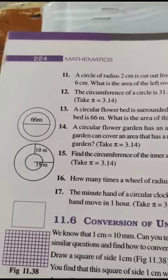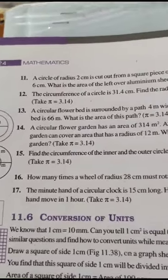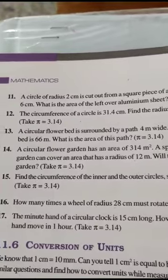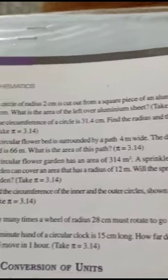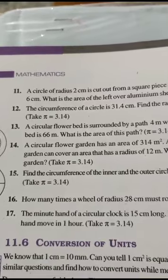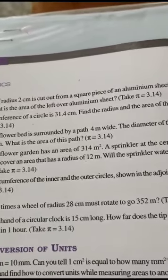Now, I am going to take question number 13. A circular flower bed is surrounded by a path 4 meters wide. The diameter of the flower bed is 66 meters. What is the area of this path?